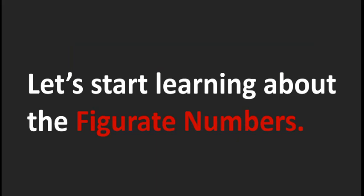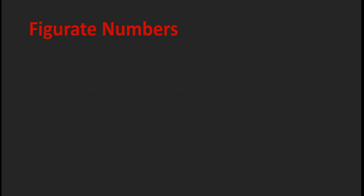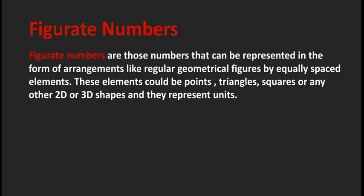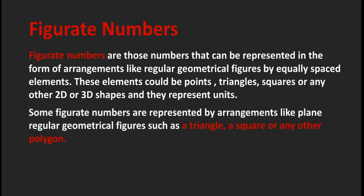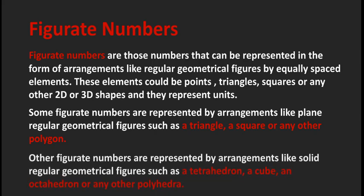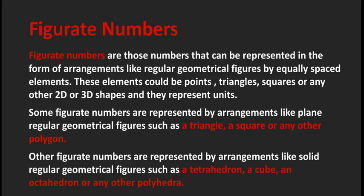Let's start learning about the figurate numbers. Figurate numbers are those numbers that can be represented in the form of arrangements like regular geometrical figures by equally spaced elements. These elements could be points, triangles, squares, or any other 2D or 3D shapes, and they represent units. Some figurate numbers are represented by plane regular geometrical figures such as a triangle, a square, or any other polygon. Others are represented by solid regular geometrical figures such as a tetrahedron, a cube, an octahedron, or any other polyhedron.